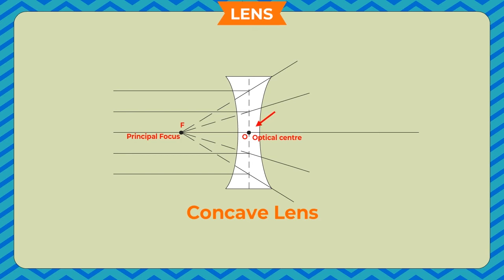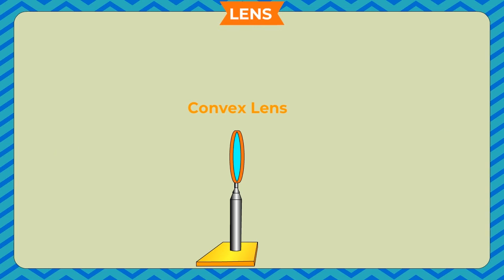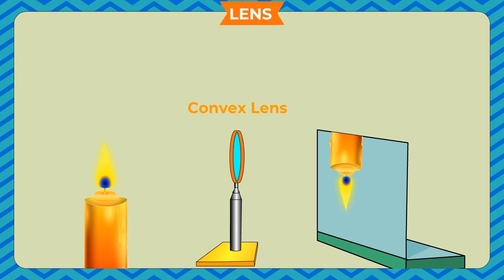The distance between the optical centre and the focus of the lens is called the focal length of the lens. To show the image formed by a convex lens, take a convex lens fixed on a stand. Place a lighted candle at about 50 cm from the lens, and place a white screen on the other side. Adjust the screen distance to get the image of the candle flame. Move the screen towards or away from the lens to get a sharp image. Now alter the distance of the candle from the lens and try to obtain the image each time, recording your observations.